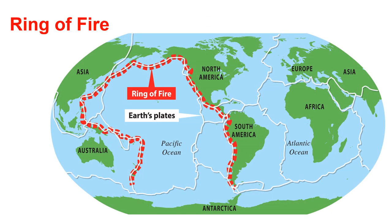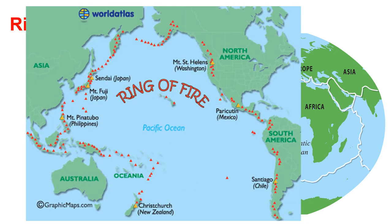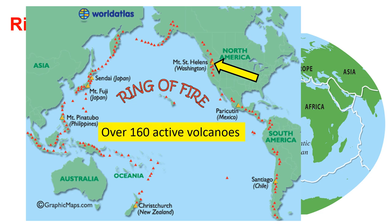Let's take a look at the Ring of Fire. Here is the map of the world. That red dotted line you see is what's called the Ring of Fire. All along these plates is where earthquakes happen and there are a lot of volcanoes. Each triangle represents a volcano on the Ring of Fire, and this orange triangle right here is Mount St. Helens. There are over 160 active volcanoes in the Ring of Fire.